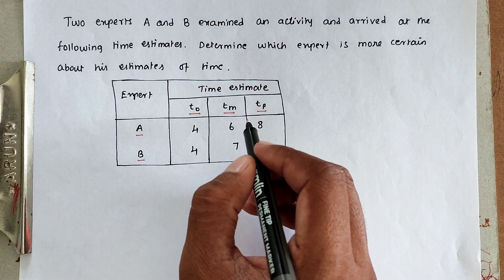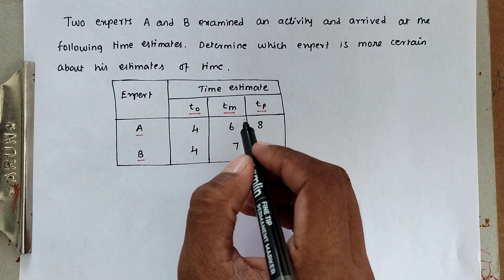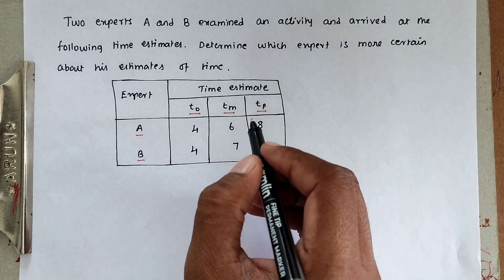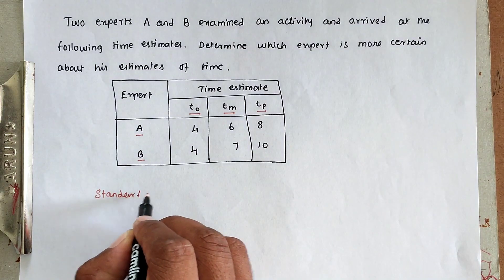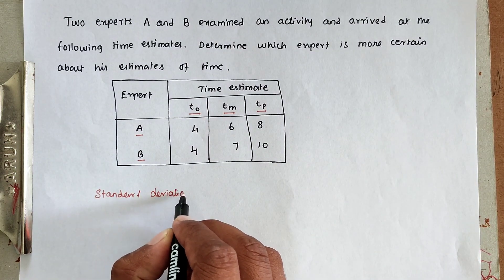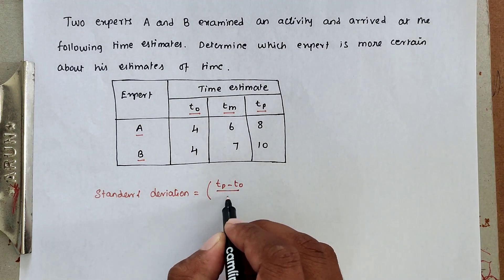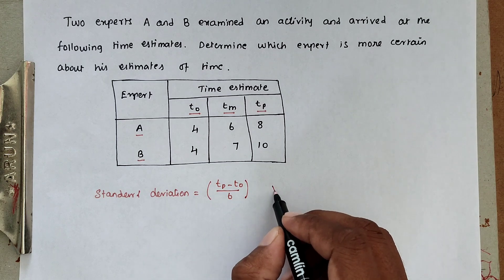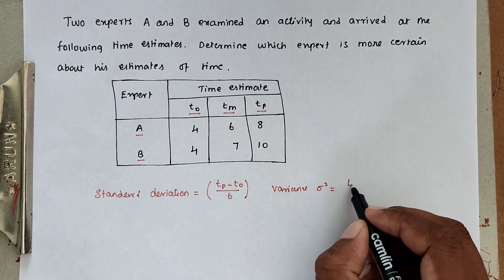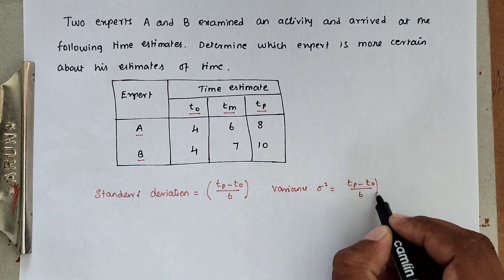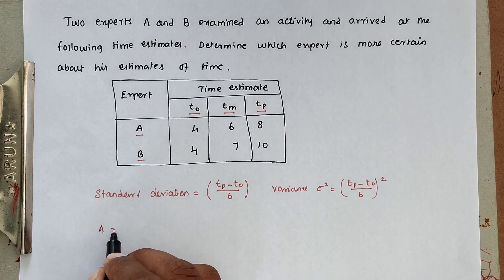We need to find the standard deviations and the variance, and after that we can determine which expert is more certain about his estimate. The formula for standard deviation is: σ = (TP − TO) / 6. The variance formula is: σ² = ((TP − TO) / 6)².